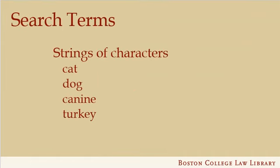Boolean searching, which is sometimes called terms and connectors searching, is based on the searcher selecting appropriate search terms. A term is a string of characters separated from other terms or from connectors by a space. The computer doesn't know what the term means — it just sees the characters.